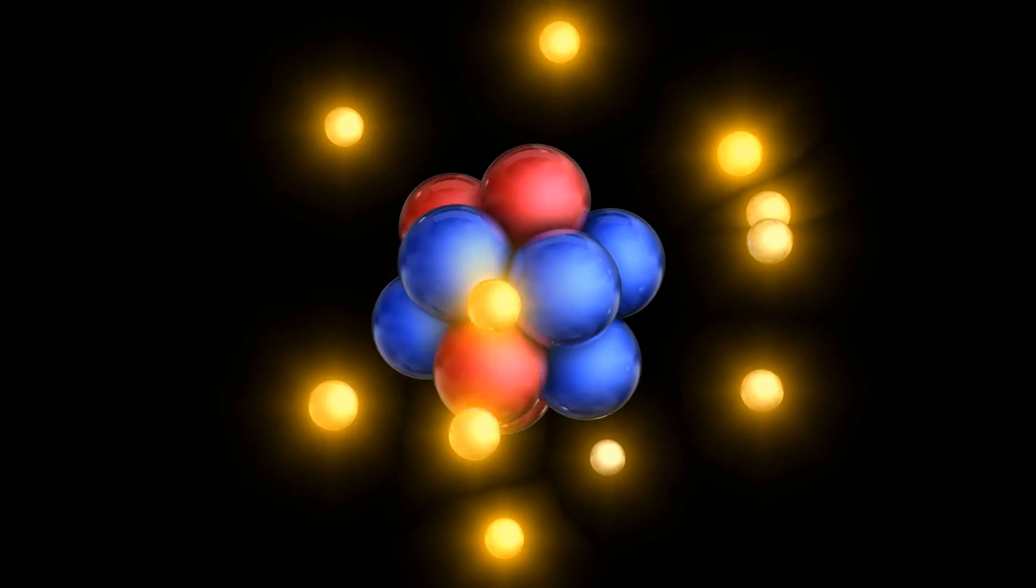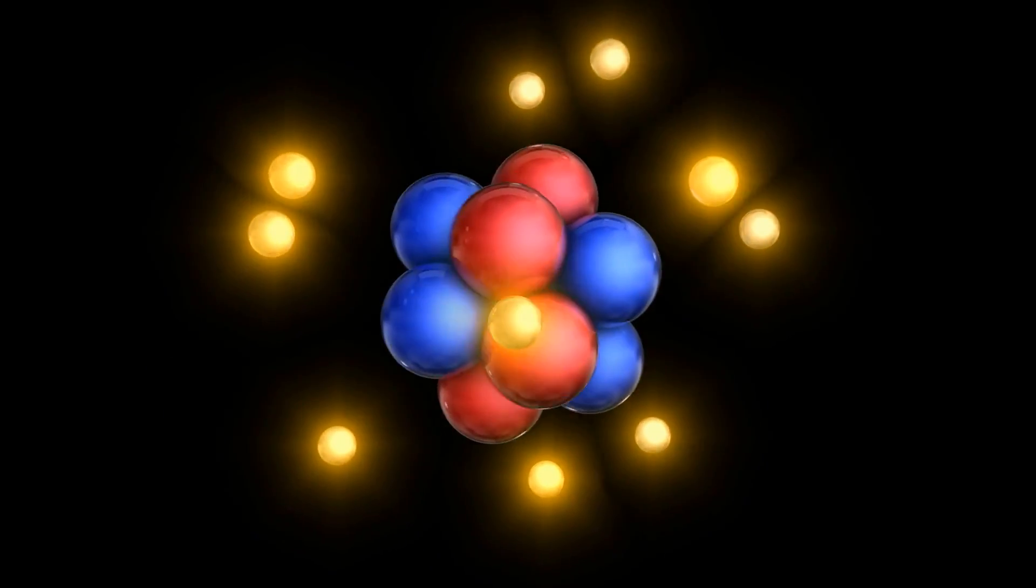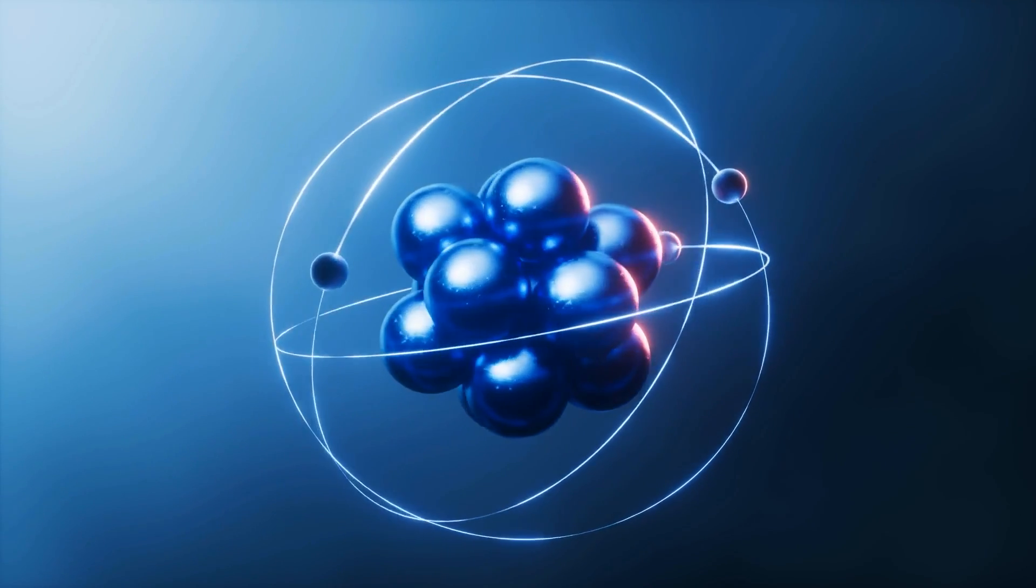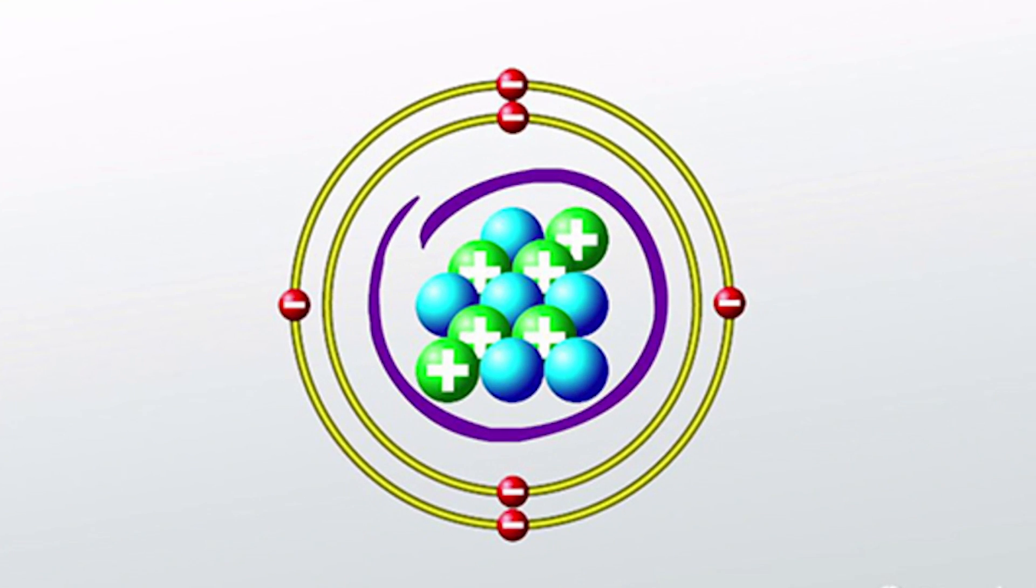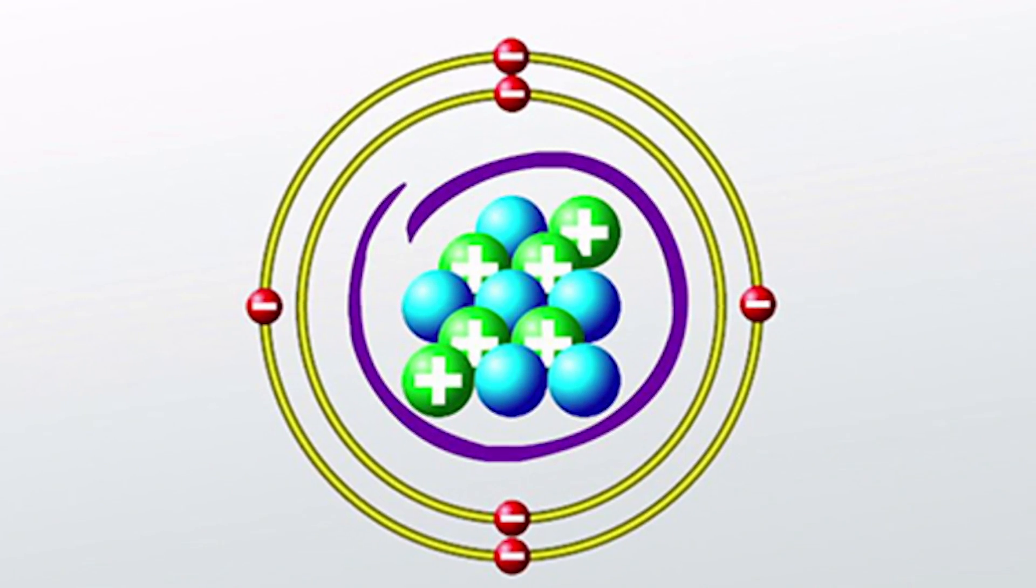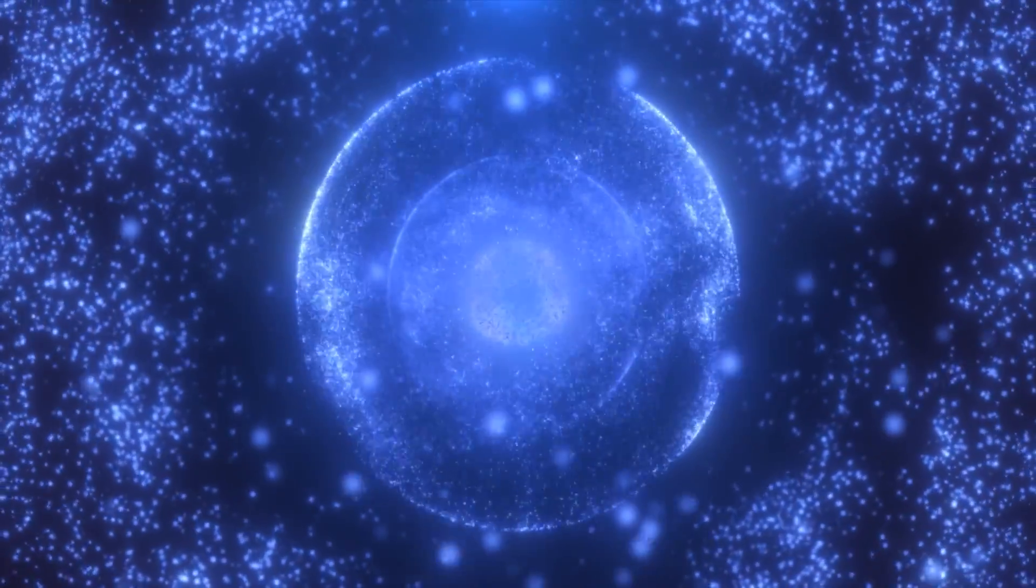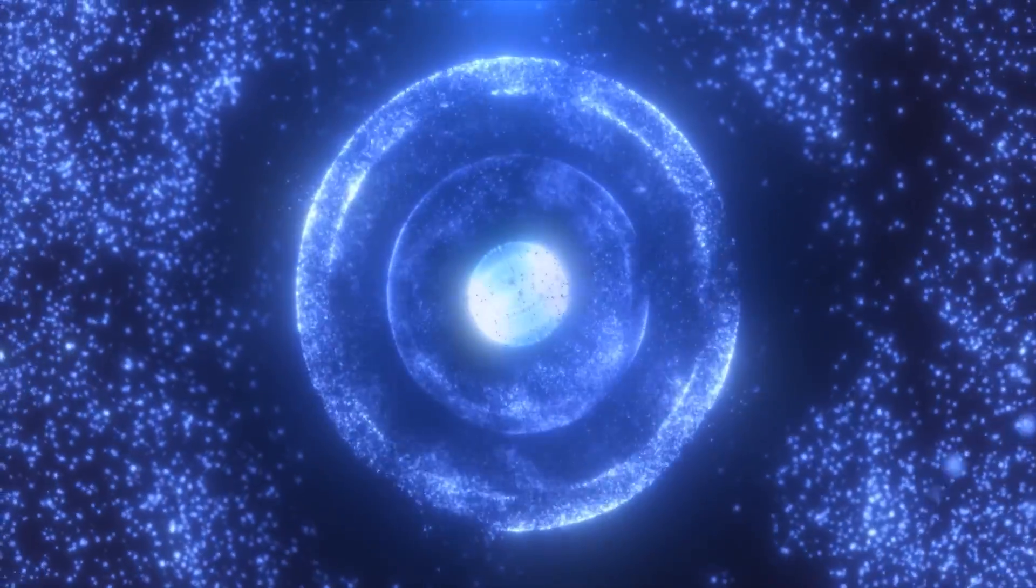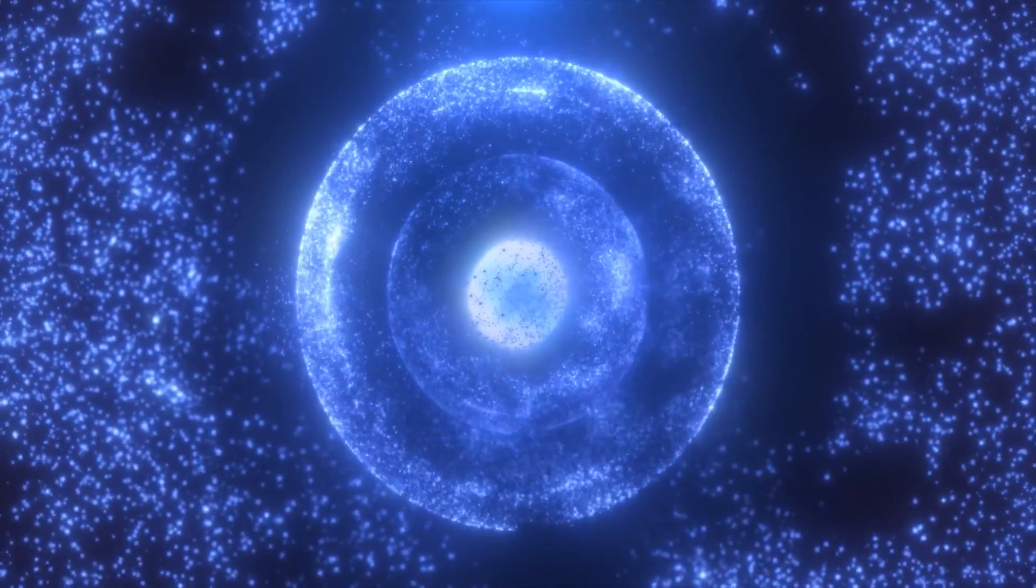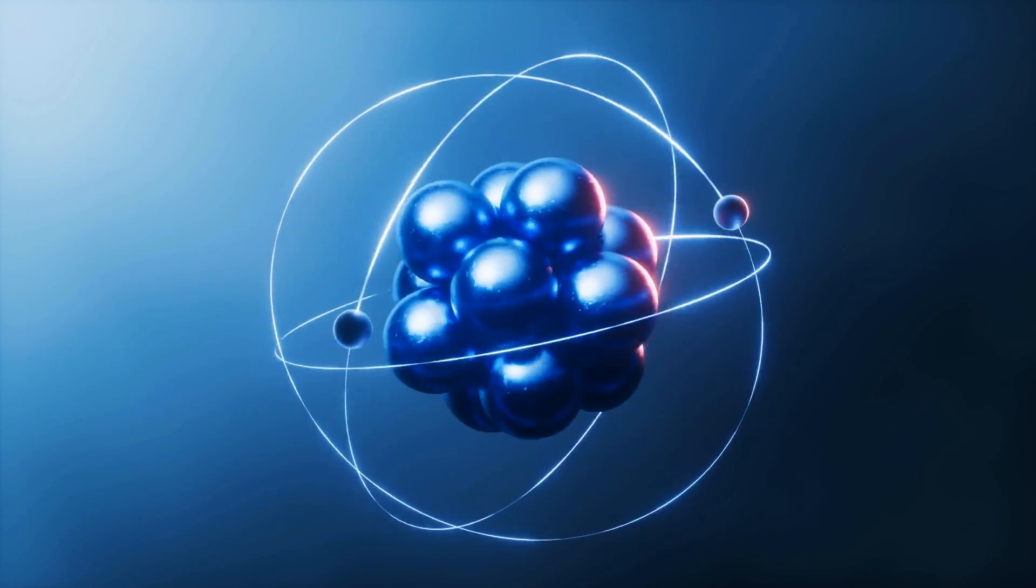This is where neutrons come in. They help to space out the protons so that the strong nuclear force can stay stronger than electromagnetism. For smaller nuclei, with an atomic number of up to 20, an equal number of protons and neutrons tends to be the most stable. But for heavier elements, more neutrons are needed to keep the nucleus stable, with neutron-to-proton ratios reaching 1.5 or higher. However, this is only part of the story.